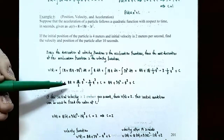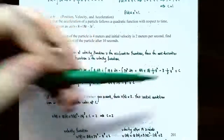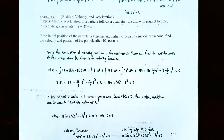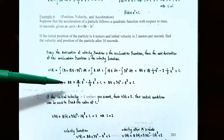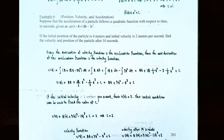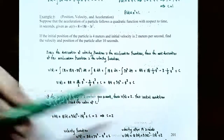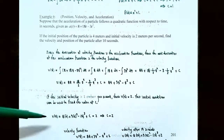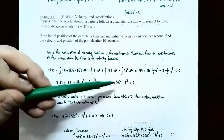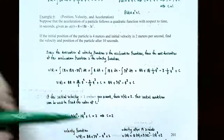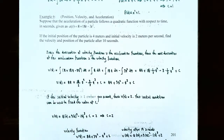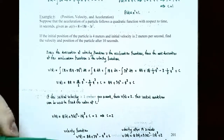The velocity function simplifies to 8t + 18 times one-half t squared − 3 times one-third t cubed + C, which gives v(t) = 8t + 9t² − t³ + C. We have a plus C for the family of antiderivatives, but we have information to find C. If the initial velocity is 2 meters per second, then v(0) = 2. Plugging in t = 0: v(0) = 8(0) + 9(0²) − 0³ + C = 2, so C = 2. We now have the particular velocity function: v(t) = 8t + 9t² − t³ + 2.